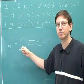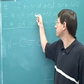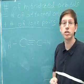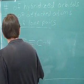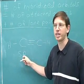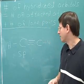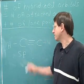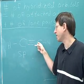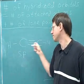What's the hybridization of this carbon? It has two attached atoms — a hydrogen and this carbon over here — and zero lone pairs. Two plus zero is two, so the number of hybridized orbitals should be two. That means this carbon is sp hybridized: one s orbital and one p orbital gives two hybridized orbitals. Note that even if you have a triple bond to an atom, it still counts as only one attached atom according to this rule.